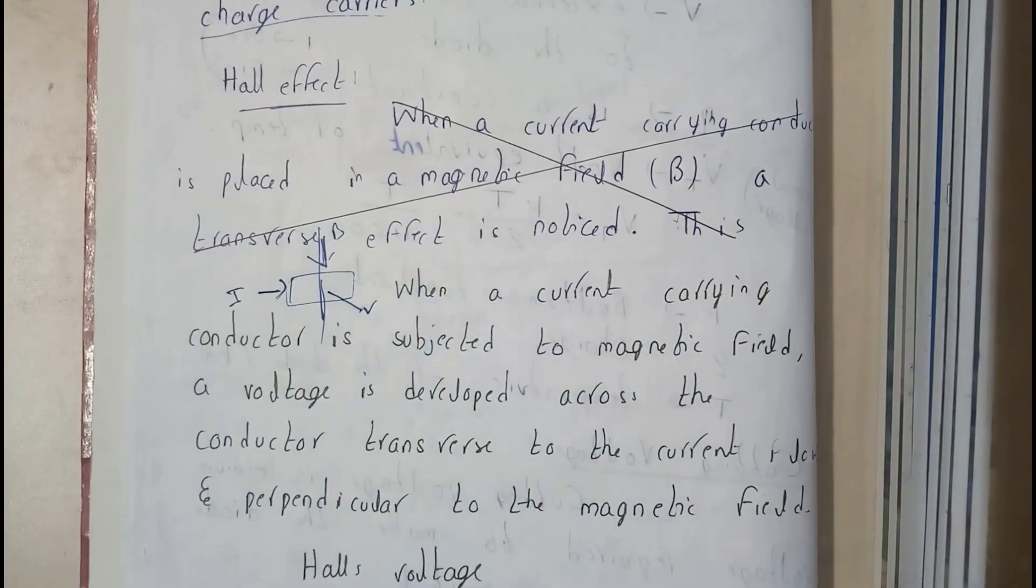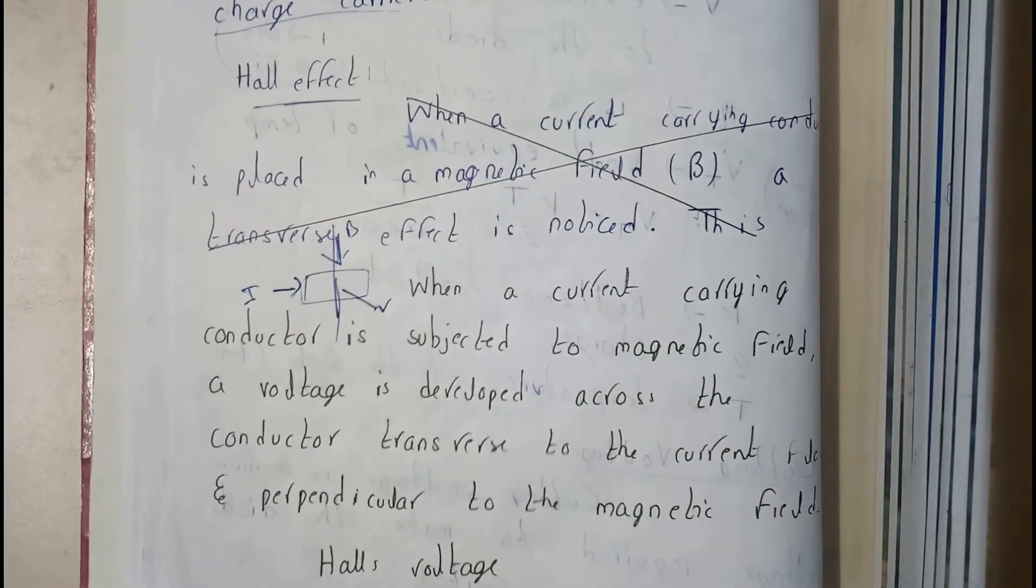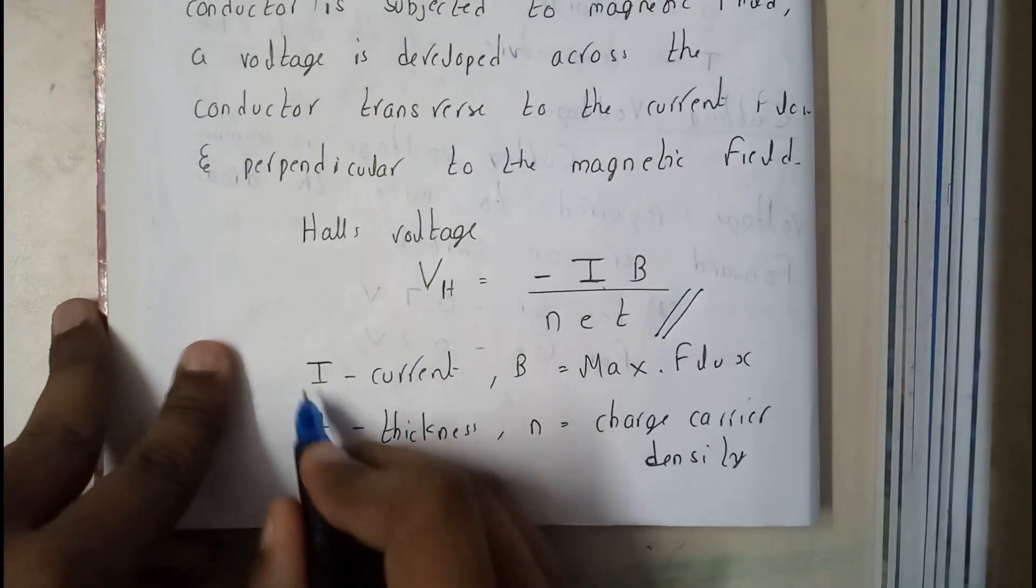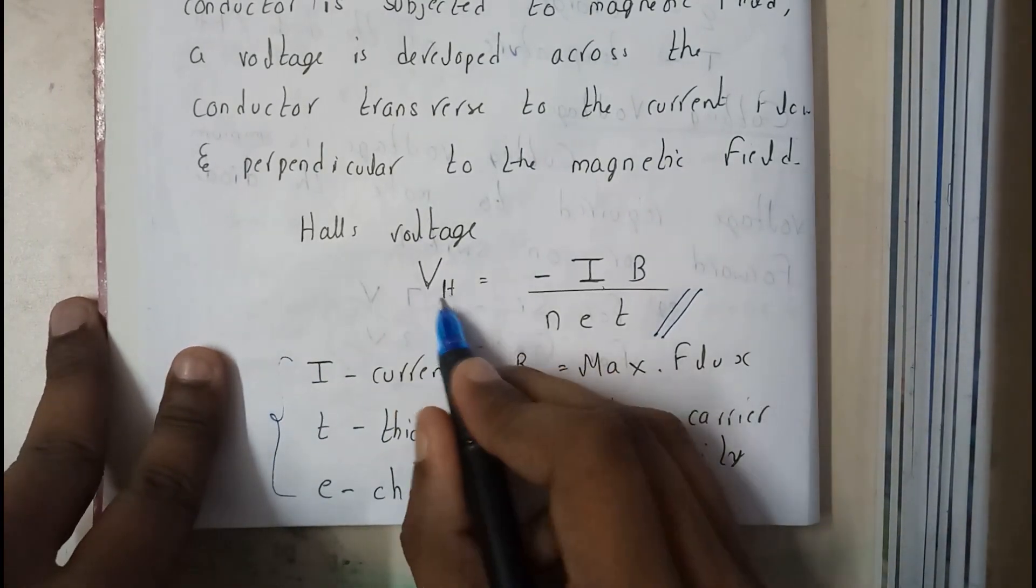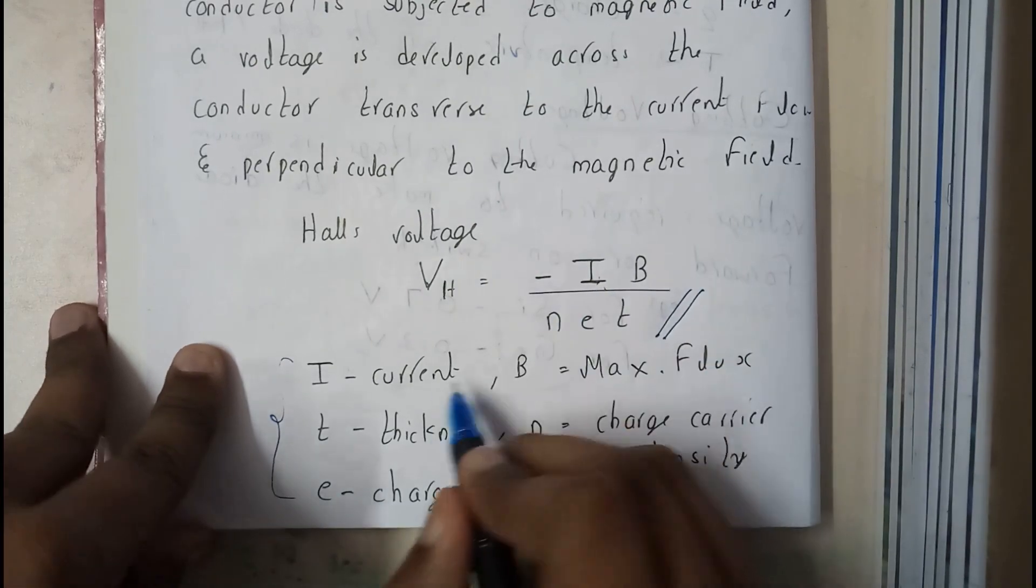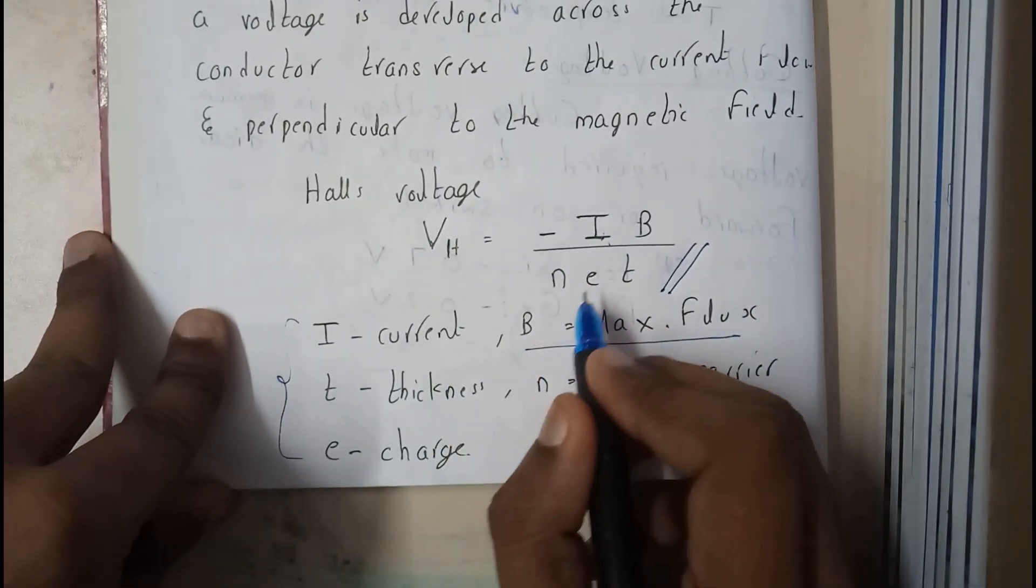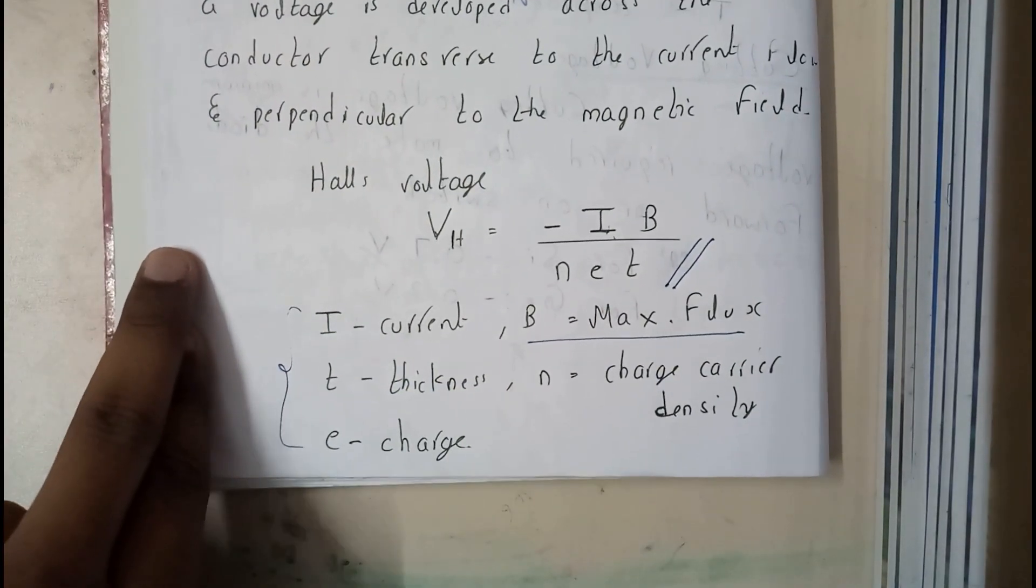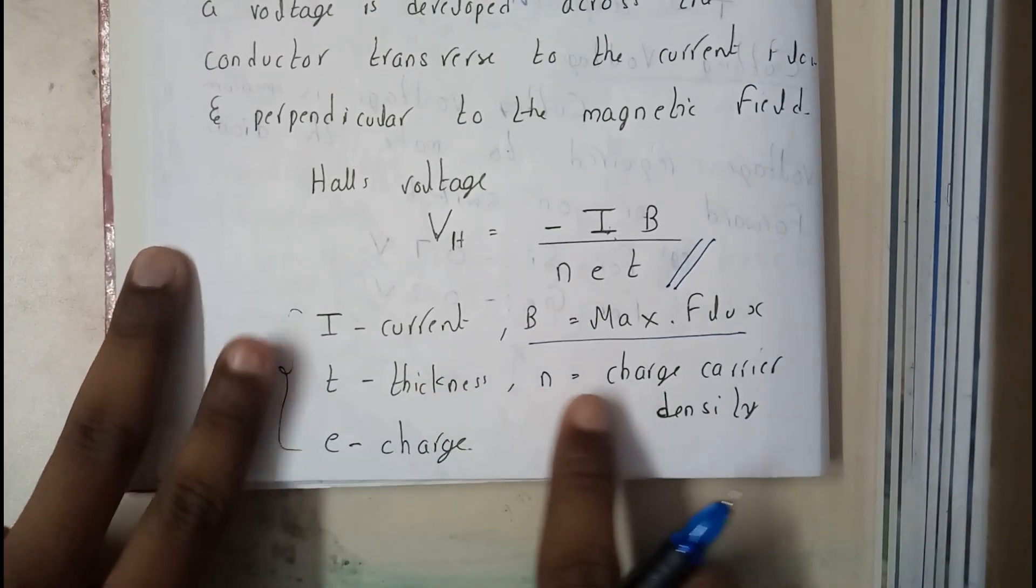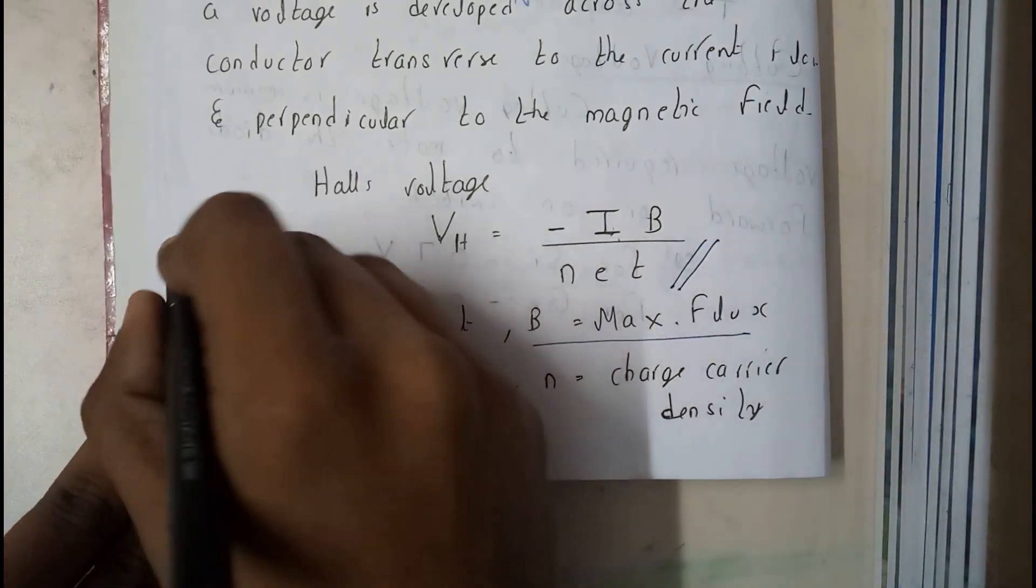Hence the Hall effect formula is VH equals IB by NET, where I is the current, B is the maximum flux (in some classes you might have heard it as beta), T is thickness, N is the charge carrier density, and E is the charge. So this is the Hall voltage formula.